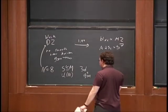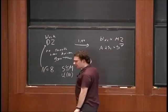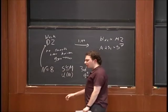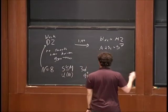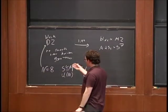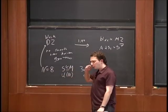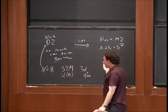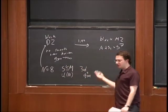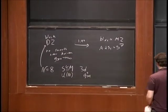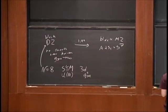In the Chern-Simons Yang-Mills theories, in the infrared, the Yang-Mills term became an irrelevant operator and you could throw it away. But here there's no Chern-Simons term, so if you try to throw away the Yang-Mills term, you throw away the whole Lagrangian. The theory just flows to strong coupling, but one can say a little bit more.